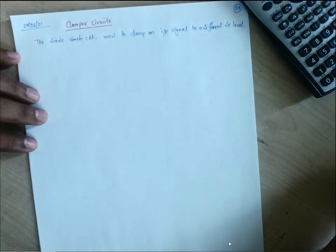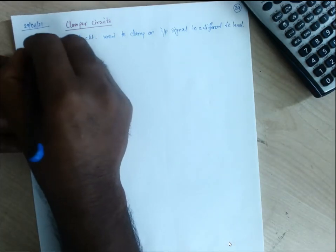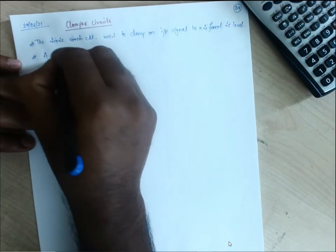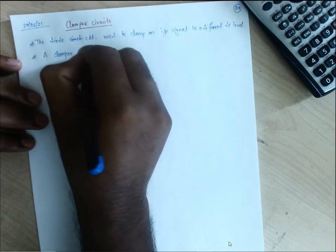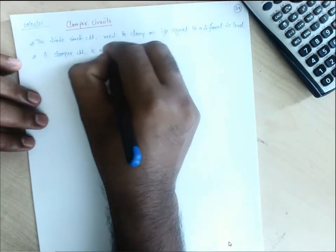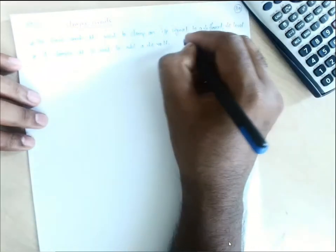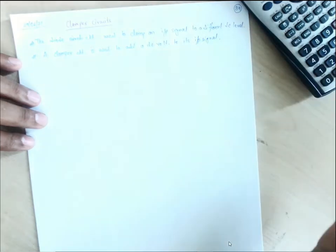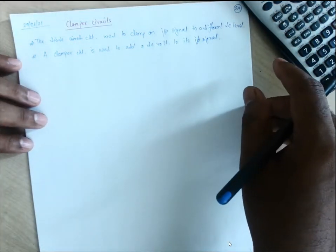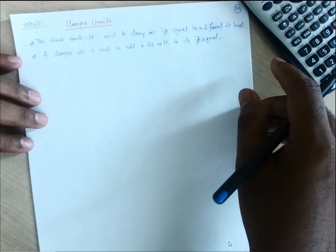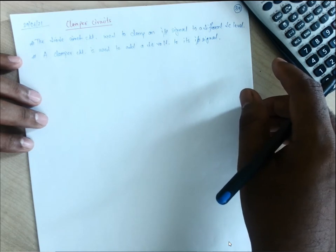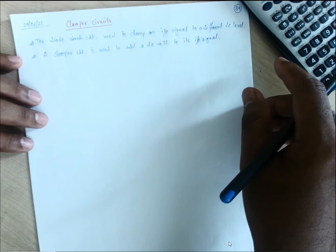In other words, a clamper circuit is used to add a DC voltage to its input signal. Another way we can define it: a clamper circuit is a network which consists of a diode, a resistor, and a capacitor that shifts a waveform to a different DC level without changing the appearance of the applied signal.